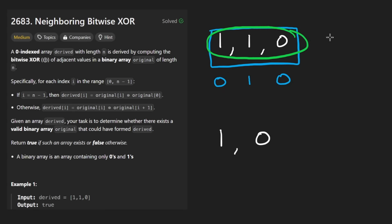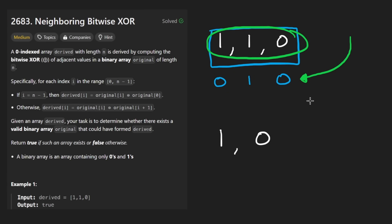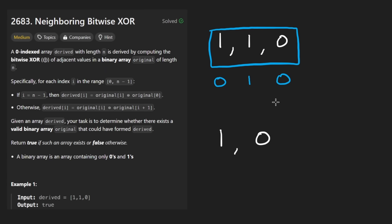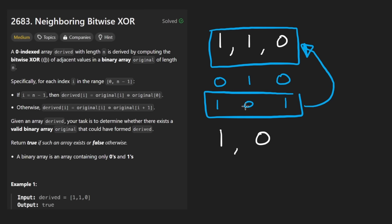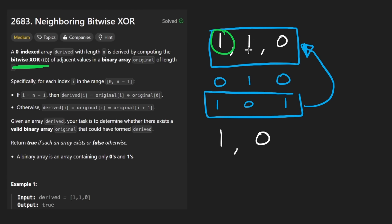Remember, this is the array that we're given, and this is the array that it was derived from. Our goal is not to recreate it — in fact, there's always going to be at least two solutions or possibly no solutions. For this example, if we were to take this array and invert it to one, zero, one, it would also satisfy the derived array. Because based on the definition of XOR, if there's a one, it tells us the two values were different — it doesn't tell us what those values themselves are. It could be zero-one or one-zero.